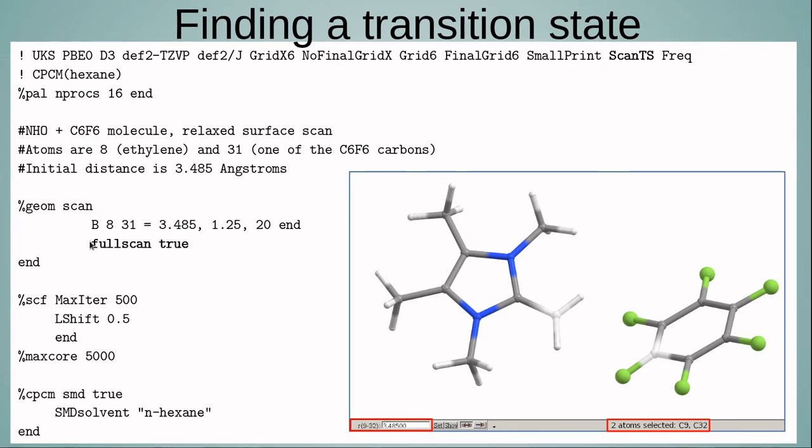I added this keyword here, full scan true, because if you don't add it, the moment it finds the local maximum, it will switch to the transition state optimization and will not finish the relaxed surface scan. Generally, you start a relaxed surface scan from far away, so the last points are the most interesting points. If you just stop at the transition state and you don't calculate the rest, you may be missing some interesting information. So I prefer to have the full scan.